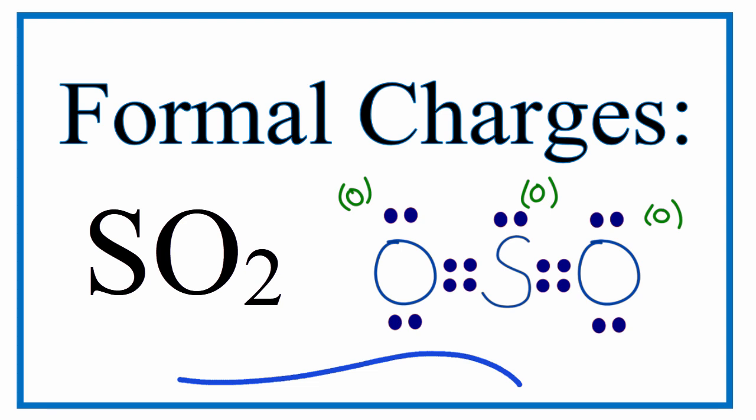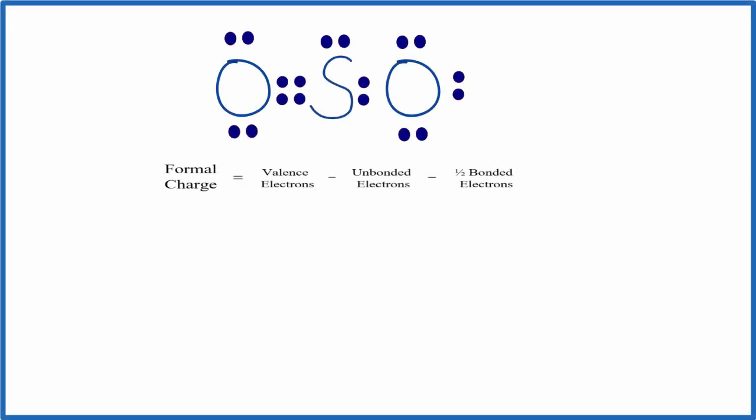SO2 is a great compound to understand formal charges with because it has a lot of nuances. If I were to draw a Lewis structure for SO2, the first one I would draw would be right here. I've got all the valence electrons used. I've got an octet on this oxygen, the sulfur, and this oxygen here. It looks like a really good Lewis structure.